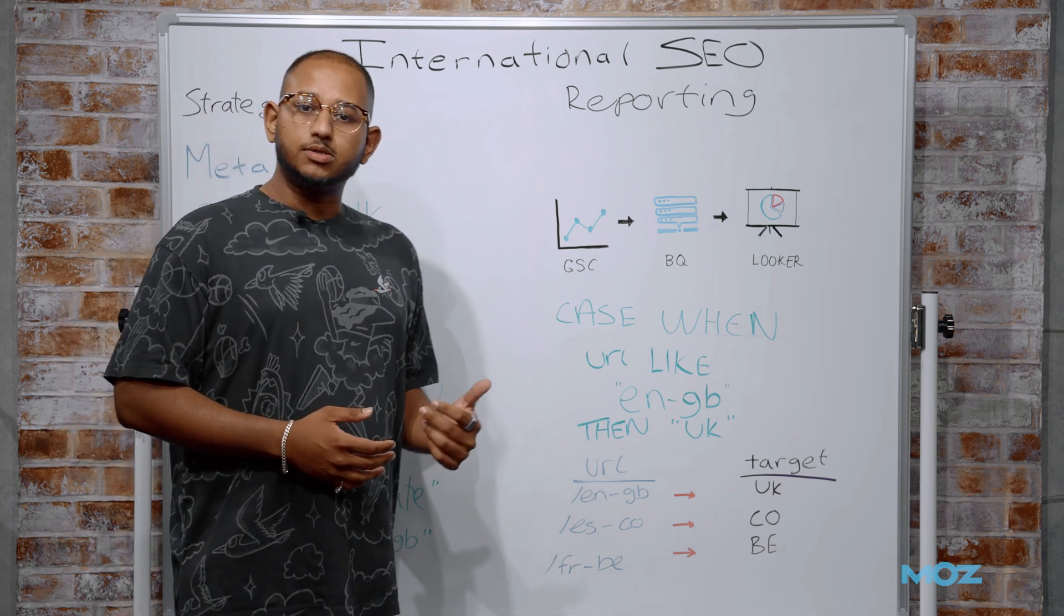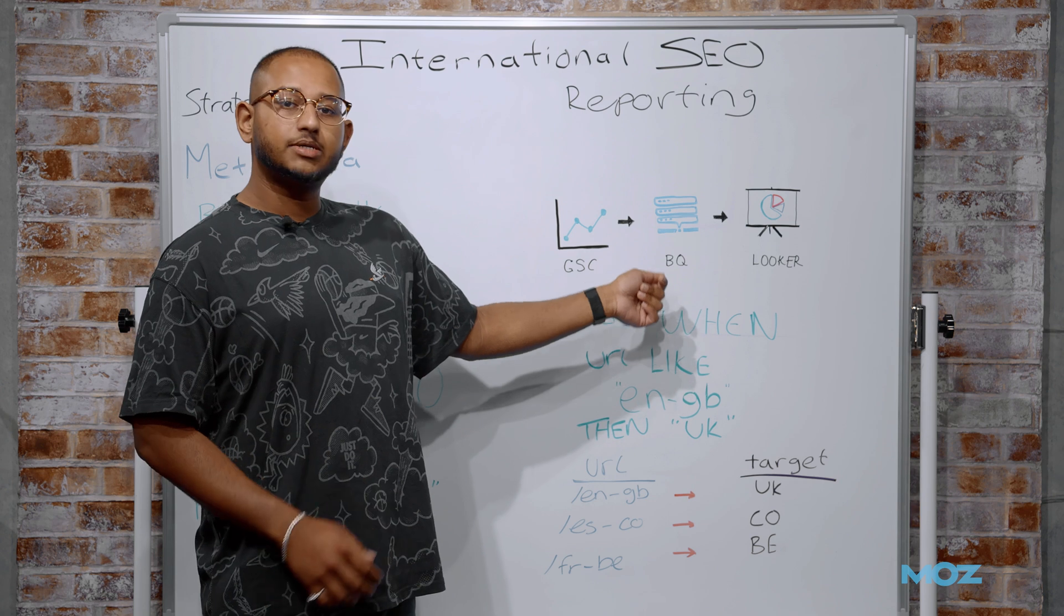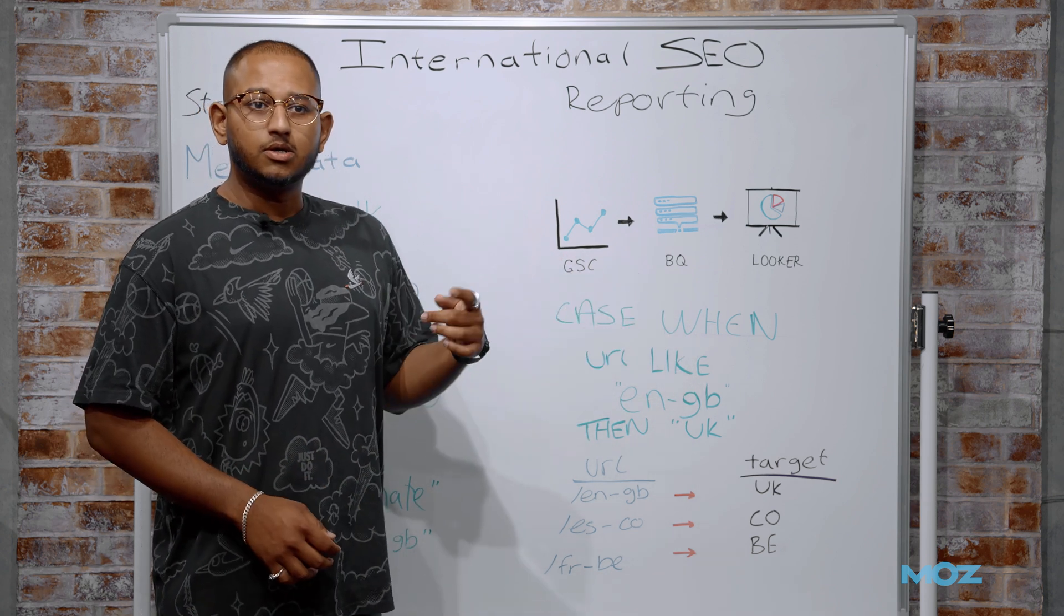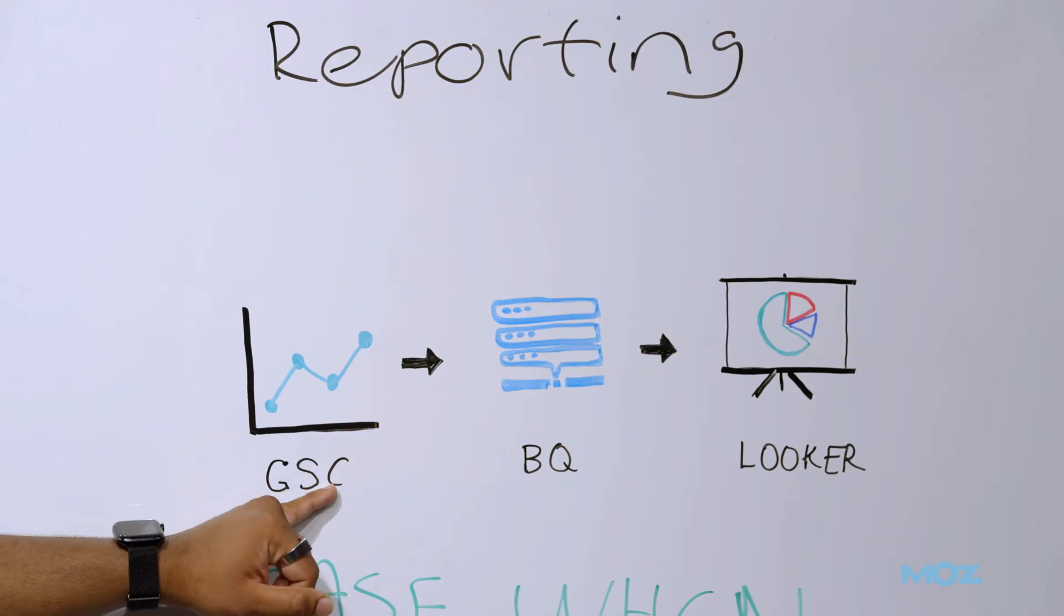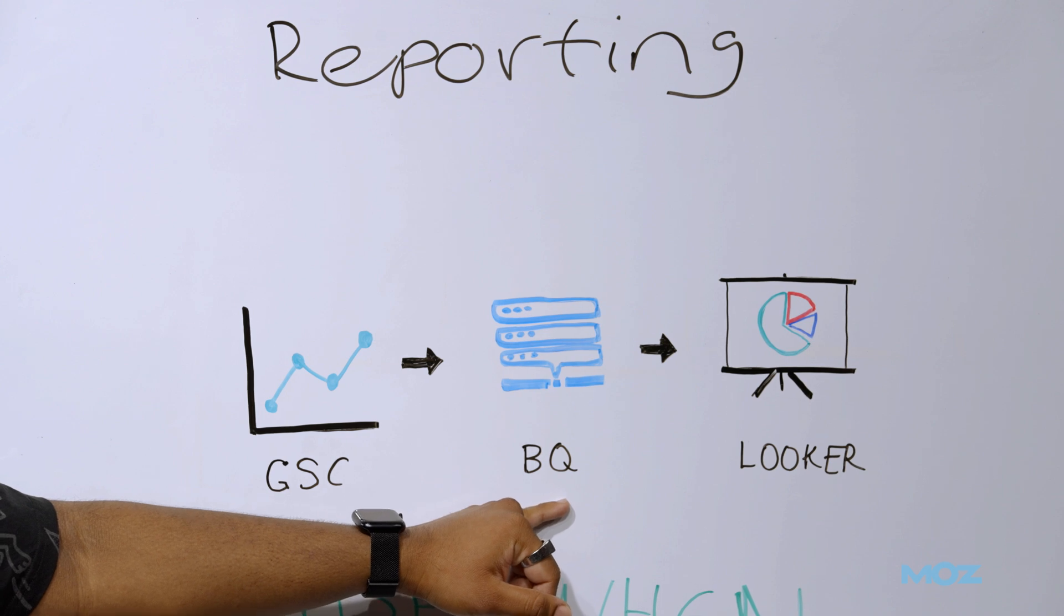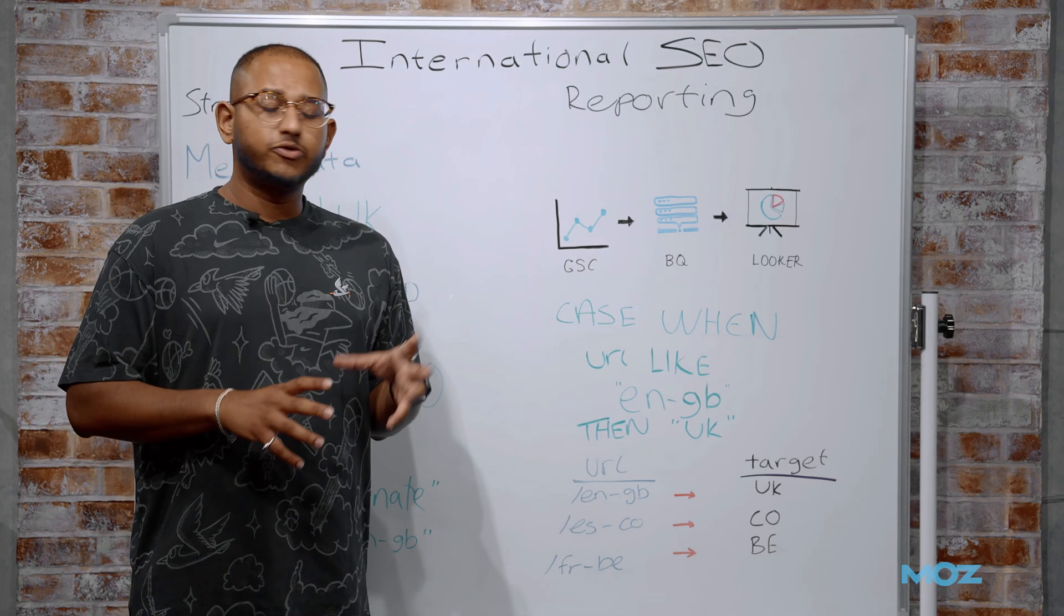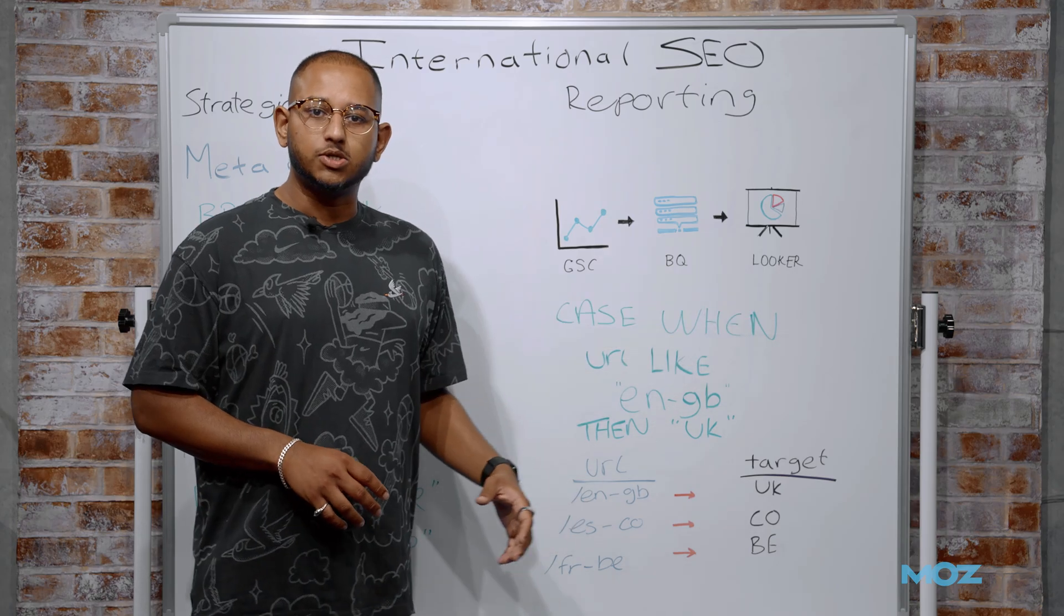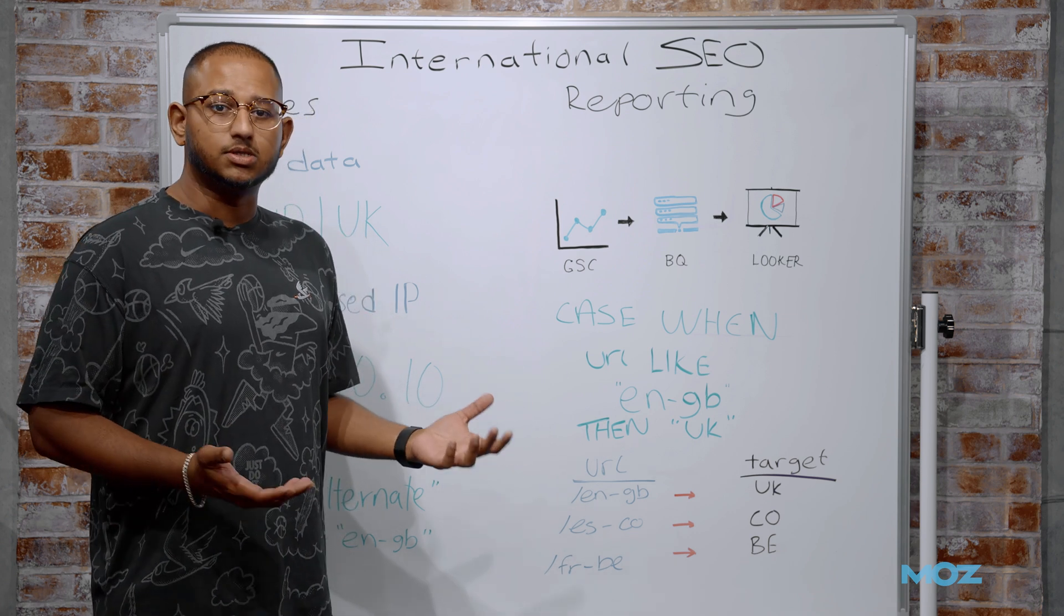So what this report does is it takes our Search Console data. It then pipes it into BigQuery. And luckily for us, Google has now set up a native connector, so it's much easier than it's ever been to get your Search Console data into BigQuery. Once the data is in BigQuery, we then do a few complex joins using case statements, and then we visualize it in Looker Studio. So we can see how effective our international strategies really are.